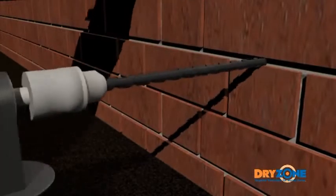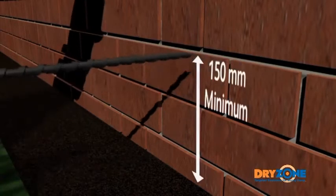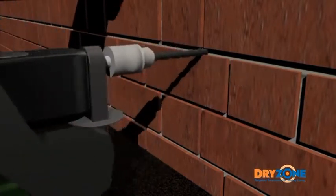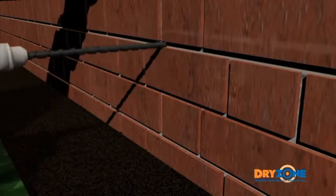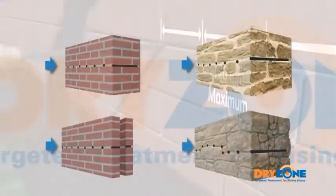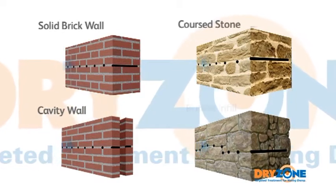12 millimetre diameter holes are then drilled at regular intervals through a level mortar bed, at least 150 millimetres above the external ground level. The depth and positioning of these holes will be determined by the type of wall structure, though in general they should be no more than 120 millimetres apart. Almost all wall types can be drilled from one side in a single operation.